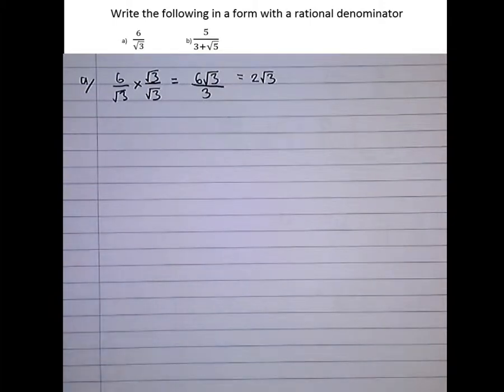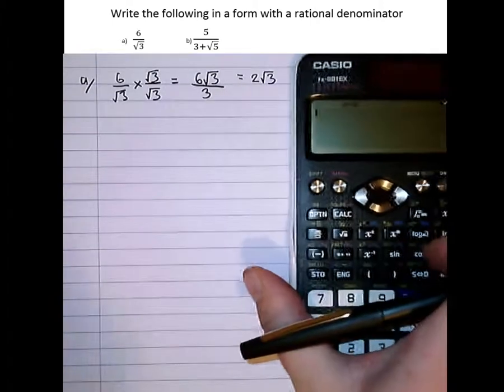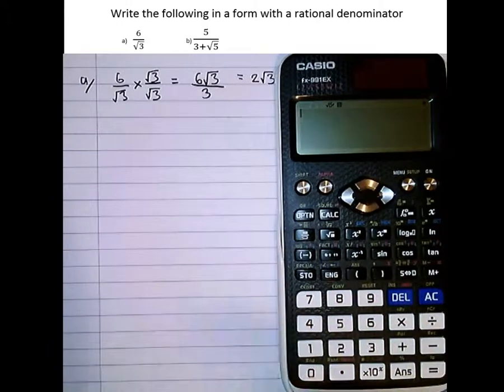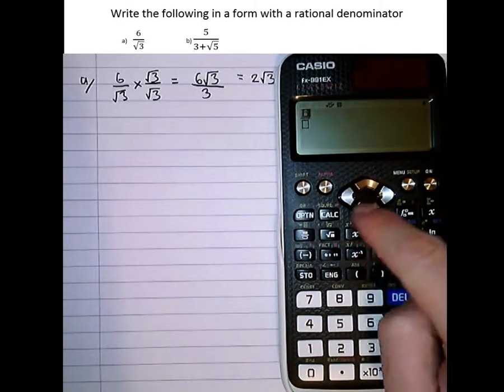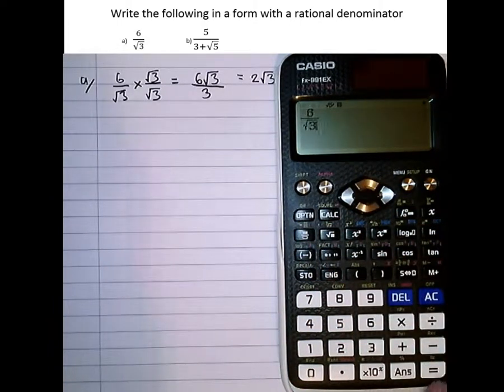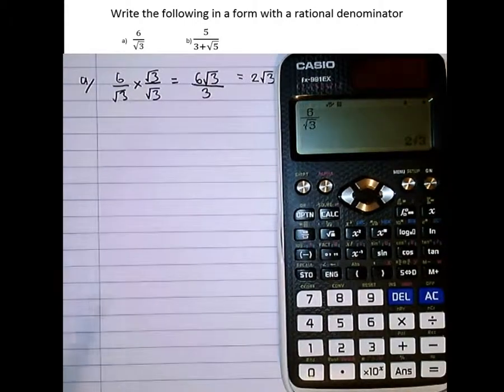We can check our answers on a calculator by just simply typing the original surd in there. So, 6 over root 3, then pressing equals. And the calculator presents it in a form with a rational denominator.